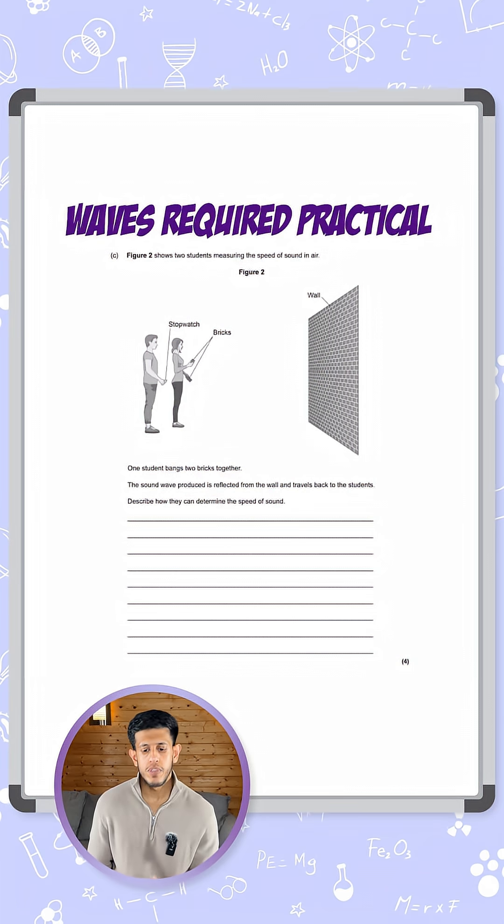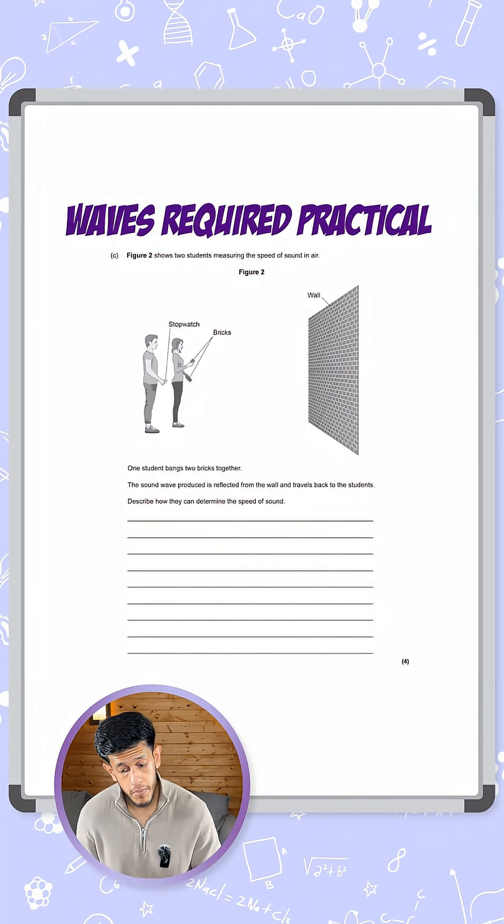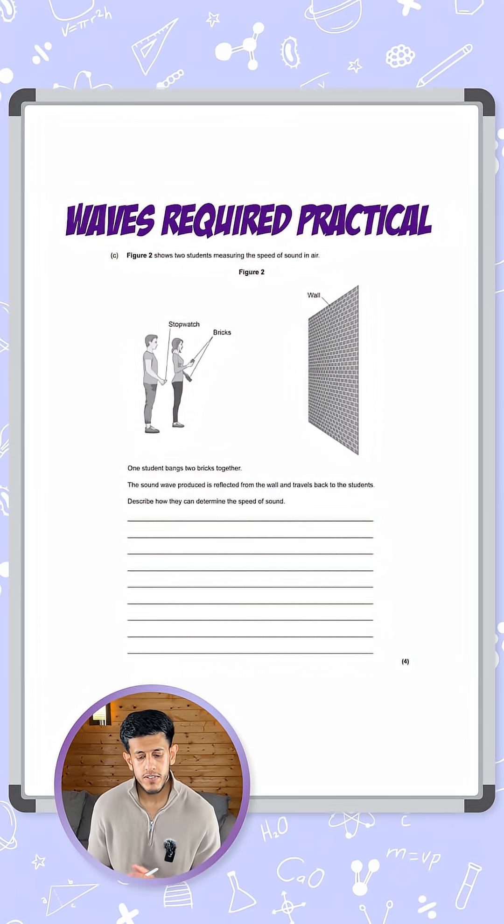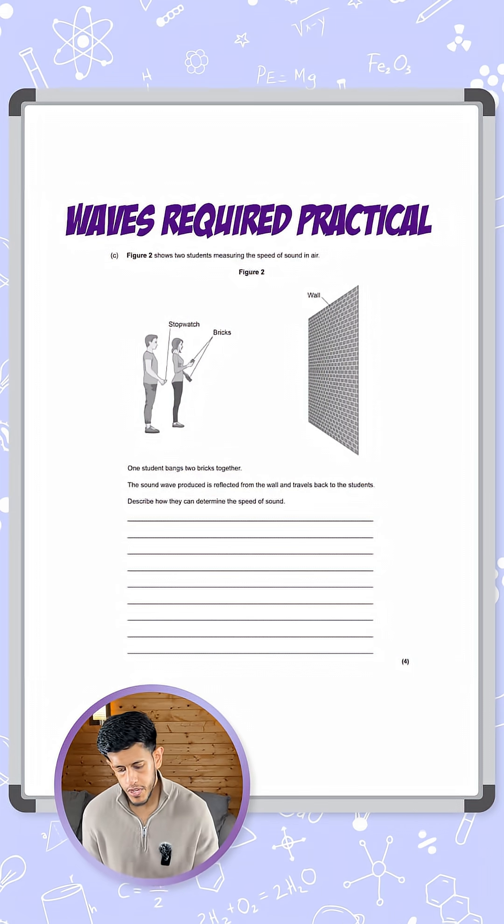Here we're talking through the method to be able to calculate the speed of sound from this experiment. We need to think about what we're doing and how we're measuring it. So apparatus and the method, those are the bits we're going to need.